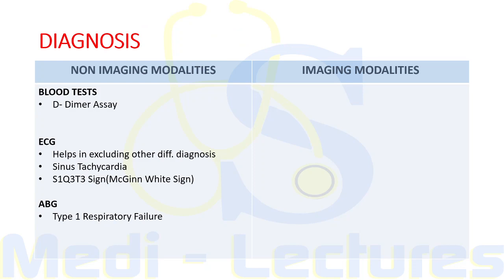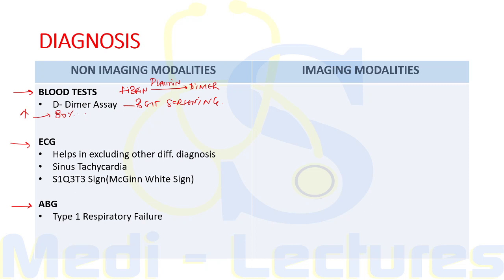For diagnosis, we have non-imaging and imaging modalities. Non-imaging modalities include blood tests, ECG, and ABG. The most important blood test is D-dimer assay — D-dimer is produced due to breakdown of fibrin by the enzyme plasmin. It is considered the best screening test for DVT and PE. If raised it has 80 percent sensitivity for DVT and more than 95 percent sensitivity for PE. A normal D-dimer can rule out pulmonary embolism.